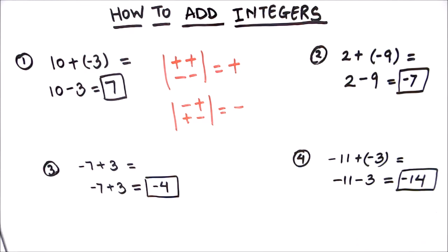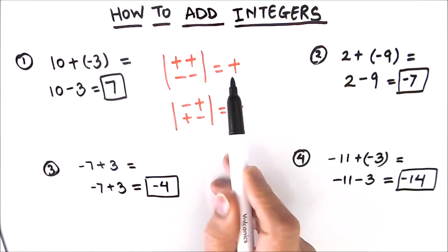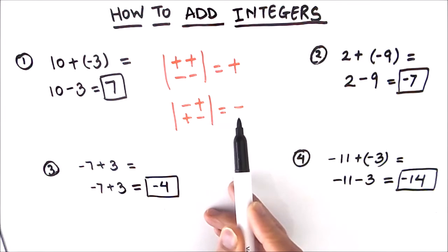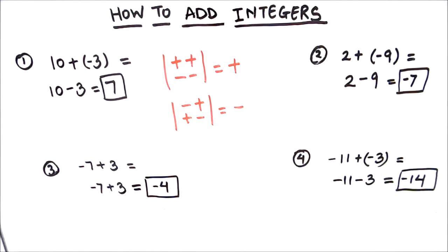So this is how we add integers. Let's recap: we just need to remember two rules. When the signs are the same, we add the two numbers. When the signs are different, we subtract the two numbers. And always remember, the sign of the answer will always be the sign of the bigger number.